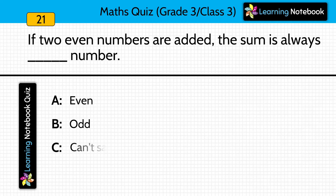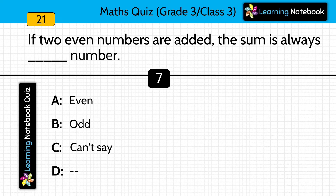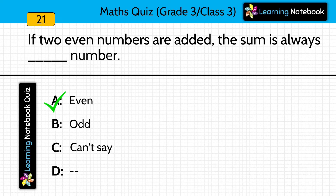If two even numbers are added, the sum is always an even number. Is the answer even number, odd number, or can't say? Answer is even number. If you add any two even numbers, the sum will always be an even number.